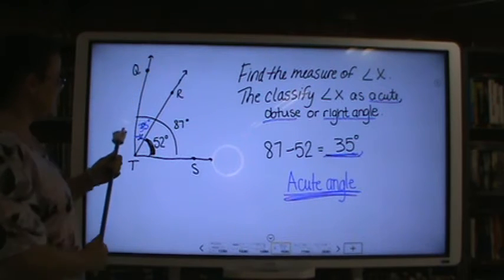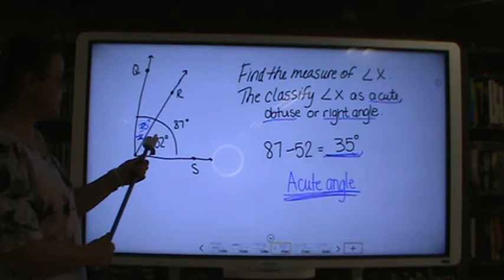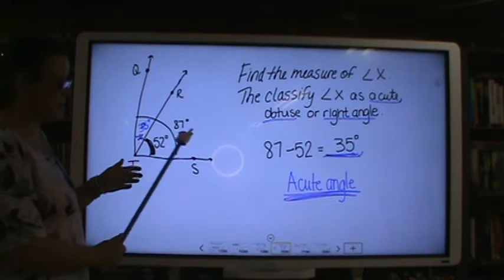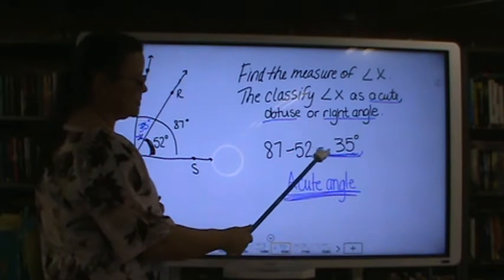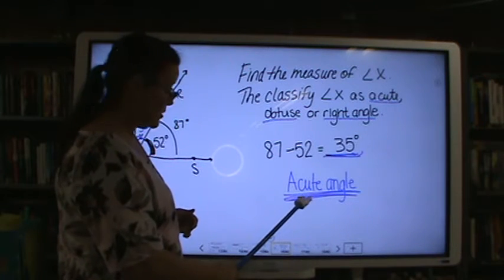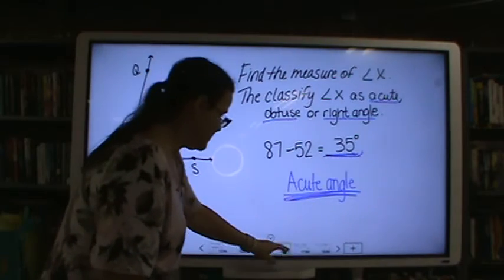You would take away the 52 degrees and you would get the 35 degrees. 87 minus 52 is 35 and a 35 degree angle would be called an acute angle. That one had two answers and those were the two answers you would give.